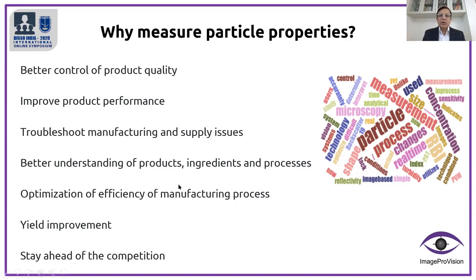Better understanding of product ingredients and processes follows the same arguments. Optimization of efficiency of manufacturing processes is another benefit — many times we are not understanding what is going wrong in our manufacturing process, so we correct our particle profiles, particle sizes, particle shapes and we can optimize the efficiency. Similarly yield improvements and staying ahead in competition are reasons why particle properties are so important.